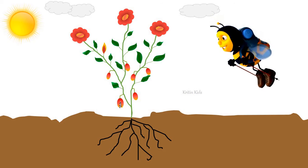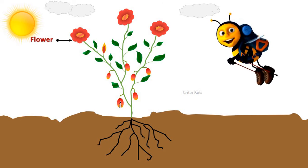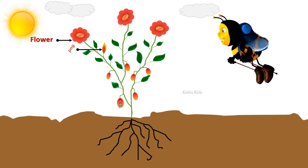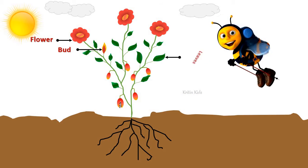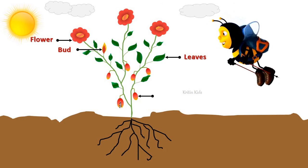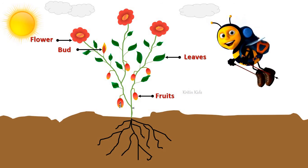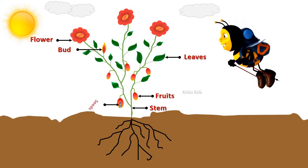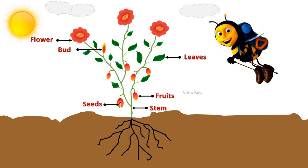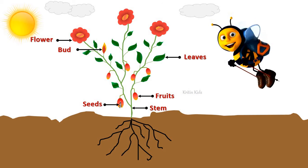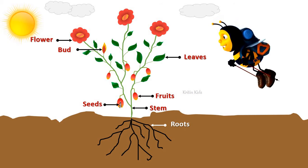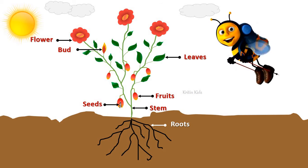This is flower. This is a bud. These are the leaves. And here are the fruits. This is the stem. These are the seeds inside the fruit. And these are the roots which are inside the soil.